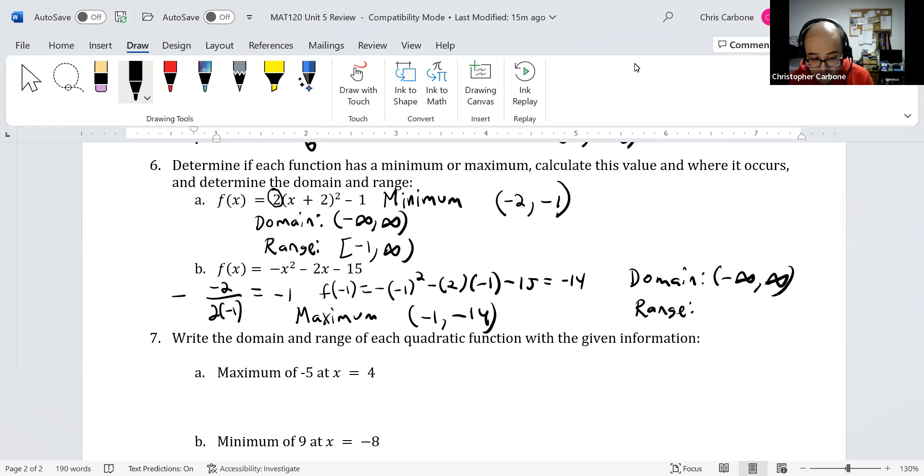Because of this being a maximum, this is going to be (-∞, -14]. A bracket around the -14, since it does include that point.